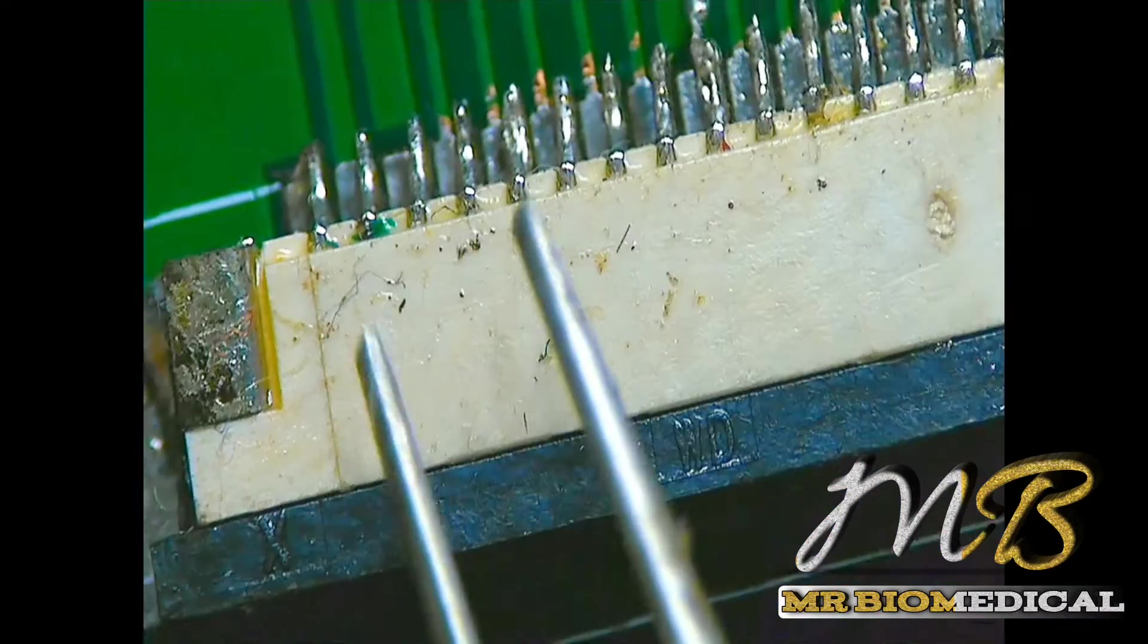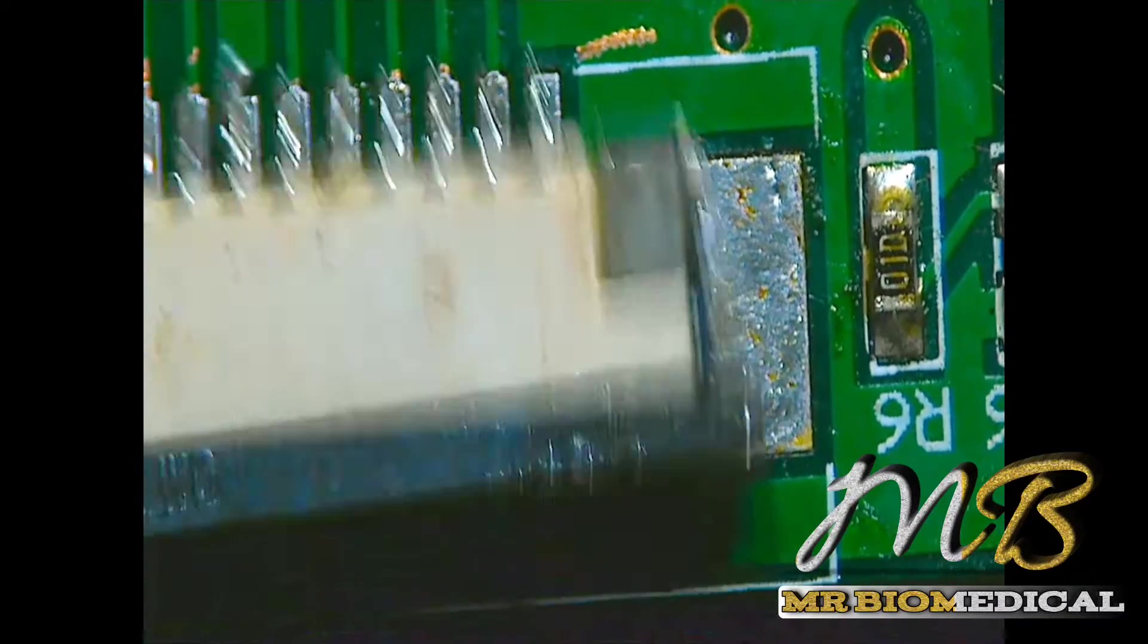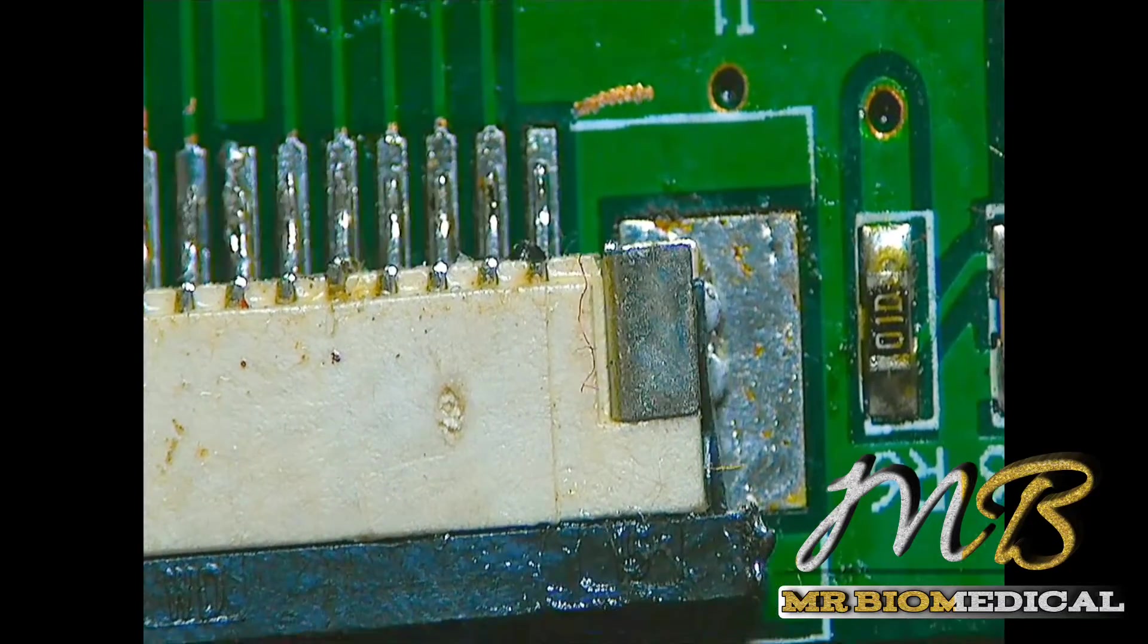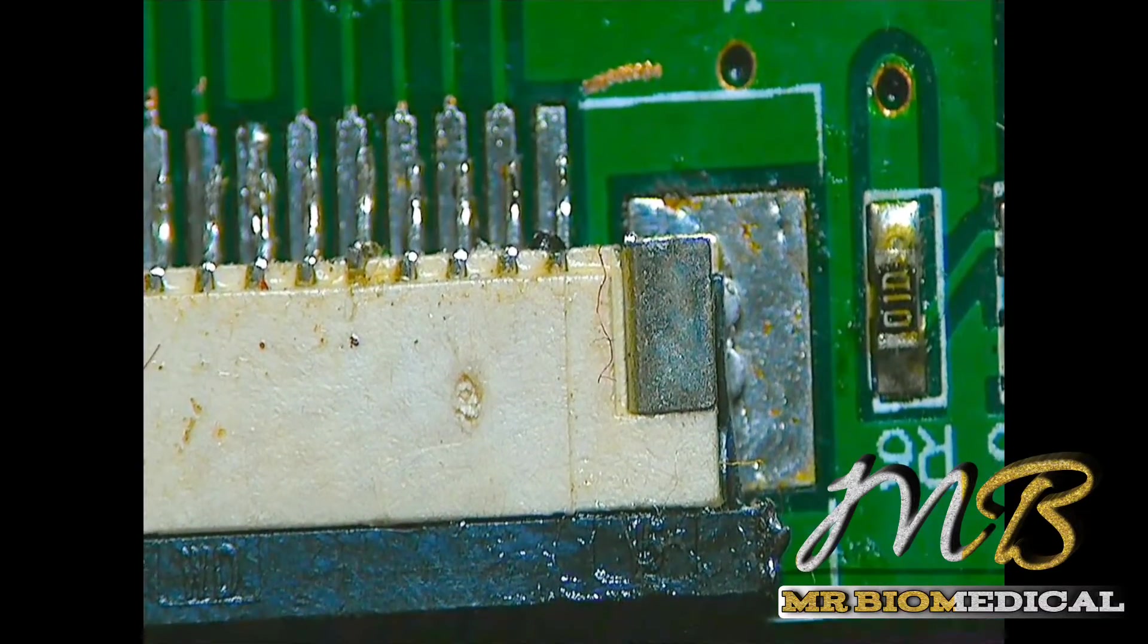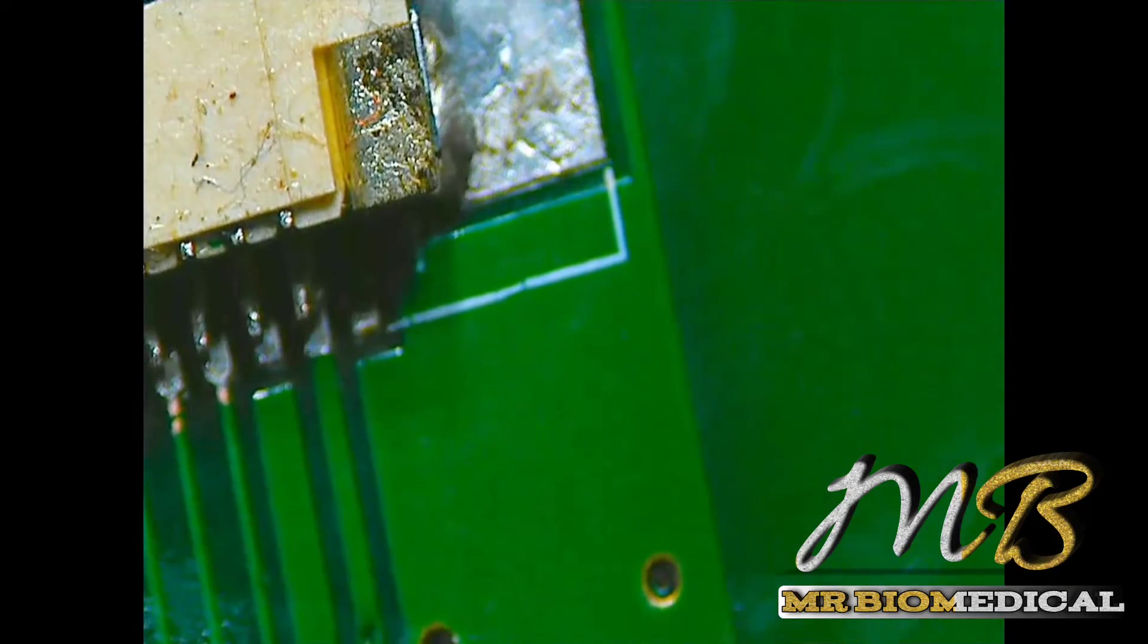Now fix the FPC connector back and solder the left side and right side to get it fixed. After that we can solder the pins. First of all you need to level the FPC connector best and solder the two ends like this.